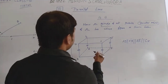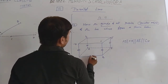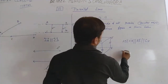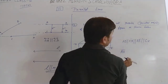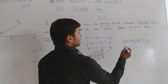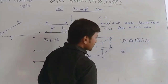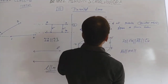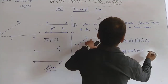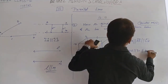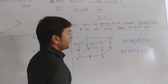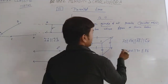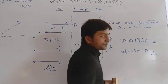Now some other lines. Another set of four lines are also parallel. This is line segment AB. So we use the symbol for line segment. AB is parallel to HE, parallel to DC, and parallel to HL. Four lines are parallel, and another four lines are also parallel. This is the answer.